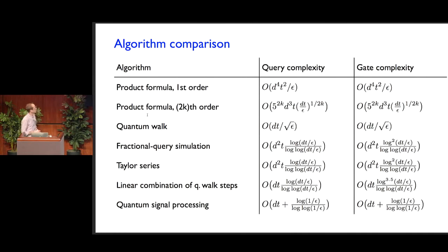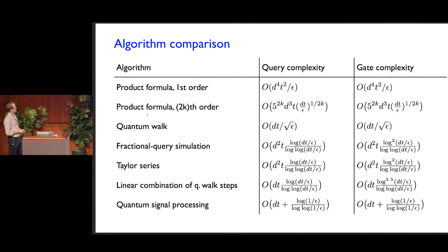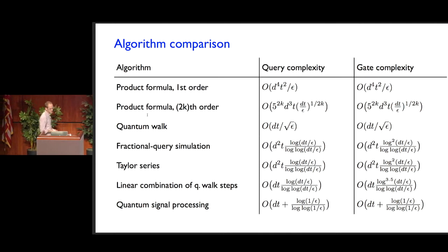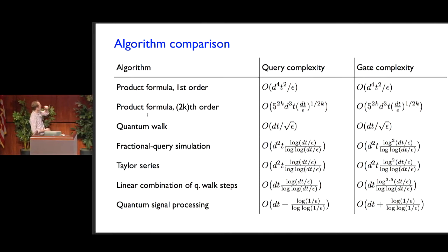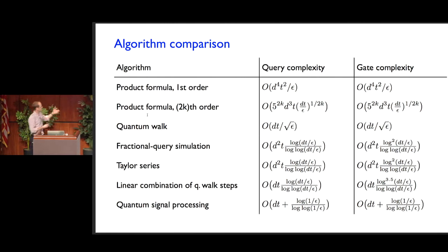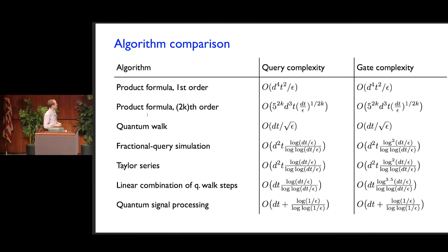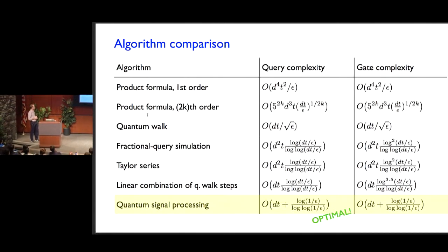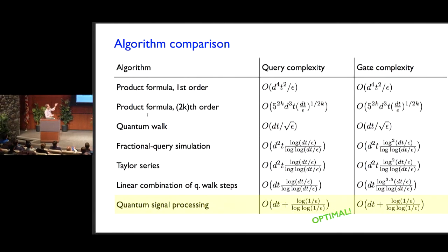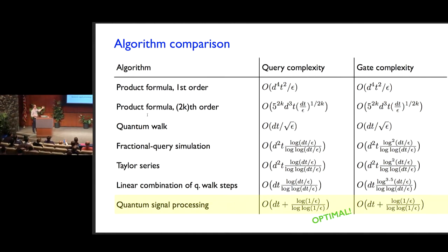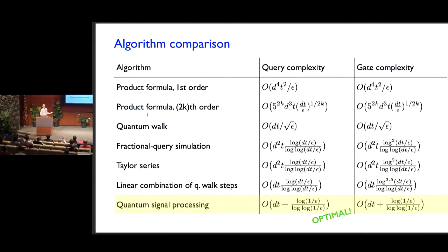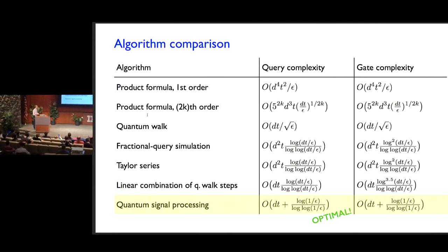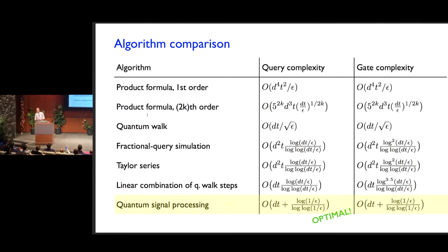Here's a table listing many of the known Hamiltonian simulation algorithms, including these product formula algorithms, the algorithm based on quantum walk with phase estimation correction, linear combination of unitary algorithms, and the quantum signal processing algorithm. At the bottom of the table is an algorithm with optimal query complexity. I've expressed the complexities as a function of d (the sparsity of a sparse Hamiltonian), t (the evolution time), and epsilon (the simulation error). The algorithm at the bottom is optimal as a function of these parameters.